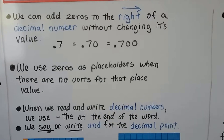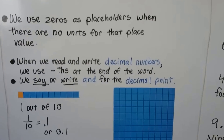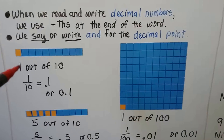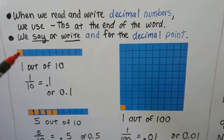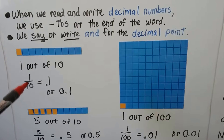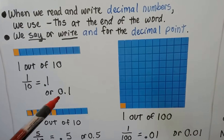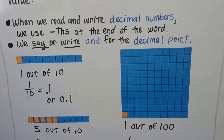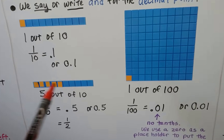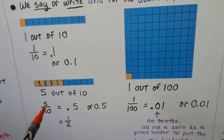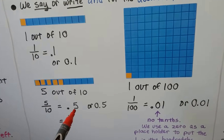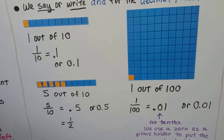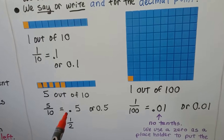We use zeros as placeholders when there's no unit for that place value. When we read and write decimal numbers, we use a THS at the end of the word, and we say or write 'and' for the decimal point. Here I've got a bar of ten, and one of them is orange — so one out of ten is orange, meaning one tenth is orange. We can write it as point one, or even zero point one. Then here we have five orange ones out of ten — five tenths. It would be point five, or zero point five. Point five is equal to a half — it's half of one whole.